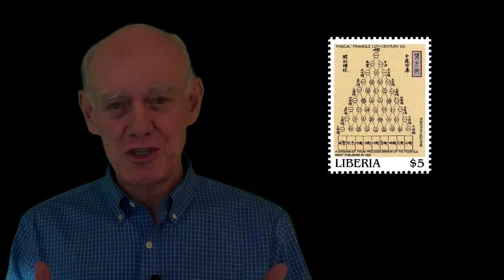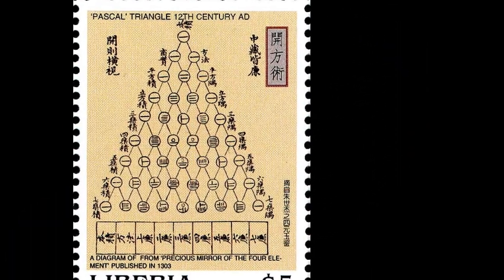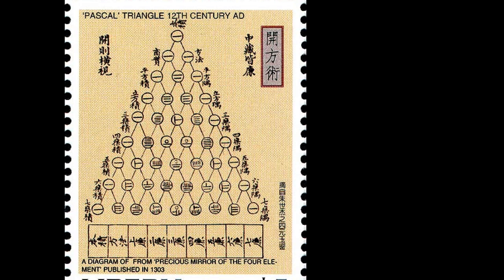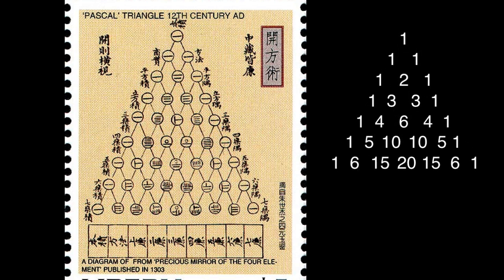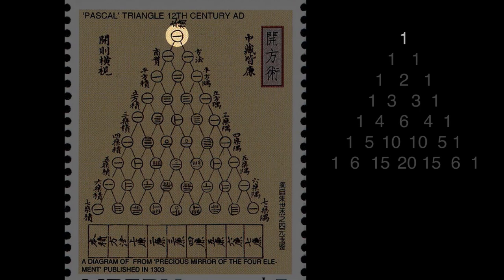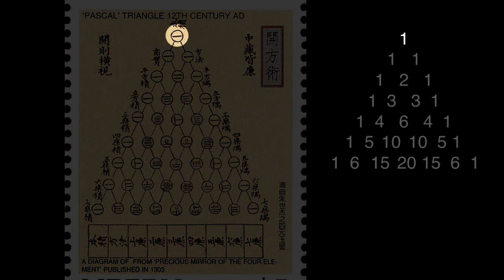Here's a postage stamp from China with a diagram from The Precious Mirror of Four Elements, a book published in 1303. The title on the stamp tells us the diagram is Pascal's triangle. The numbers in the pattern are in Chinese, but once we know it's Pascal's triangle, we know what each of the numbers mean. The top number must be 1, so every time we see that symbol — the horizontal bar — it must be 1.